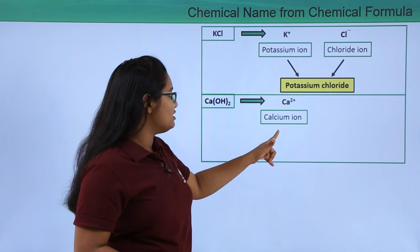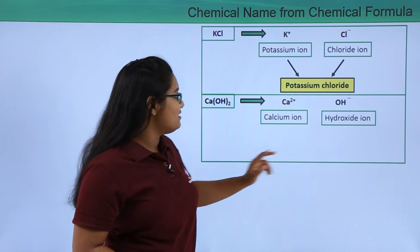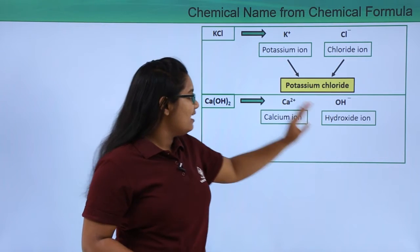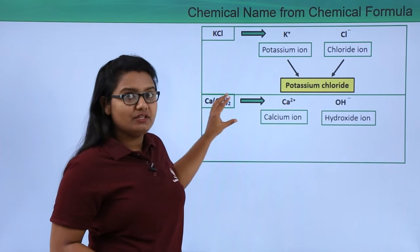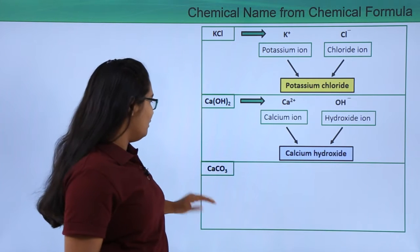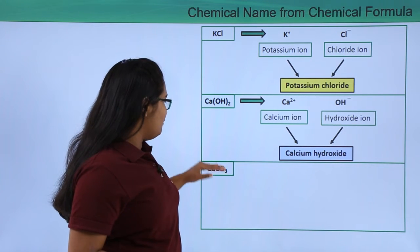And OH which is a hydroxide ion. So we can combine these two names and get the whole name of this particular compound as calcium hydroxide.